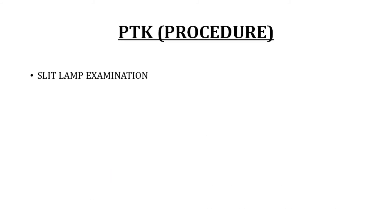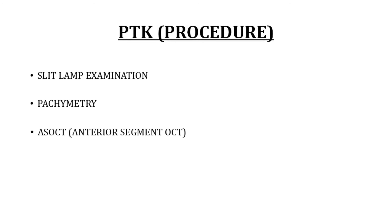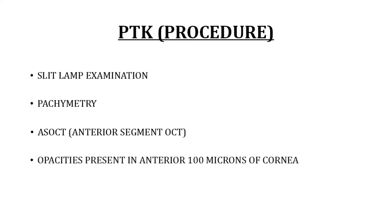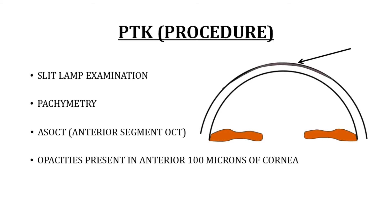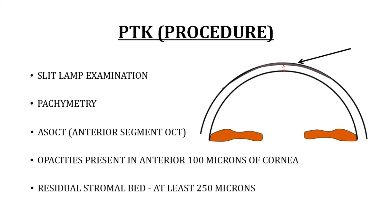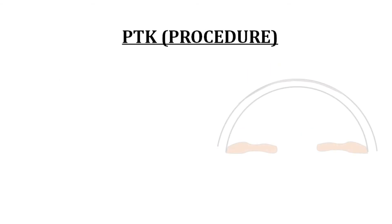The patient is assessed meticulously on the slit lamp. Corneal tests like pachymetry and anterior segment OCT are done to confirm corneal thickness and assess the depth of the opacity. It is recommended that PTK be performed for opacities present in the anterior 100 microns of cornea. The residual stromal bed after ablation should be at least 250 microns, though most surgeons aim for 350 to 400 microns.